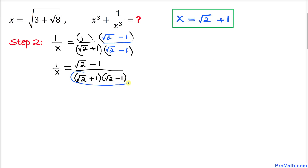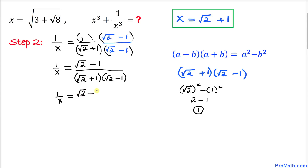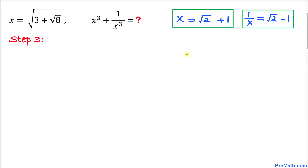Focusing on the denominator: it is the product of a sum and a difference, so we apply the difference-of-squares formula. This gives (√2)² minus 1², and since the square and square root undo each other we get 2 minus 1, which equals 1. Therefore 1/x equals (√2 − 1) divided by 1, which simplifies to simply √2 − 1.